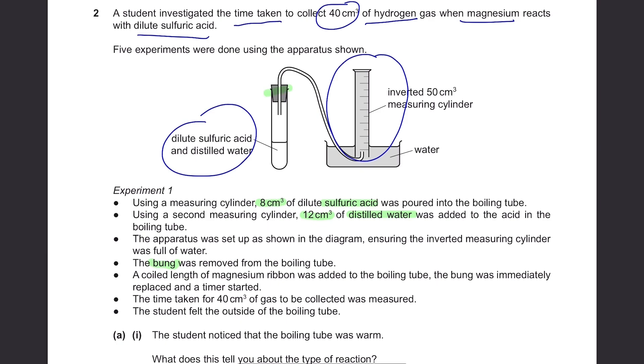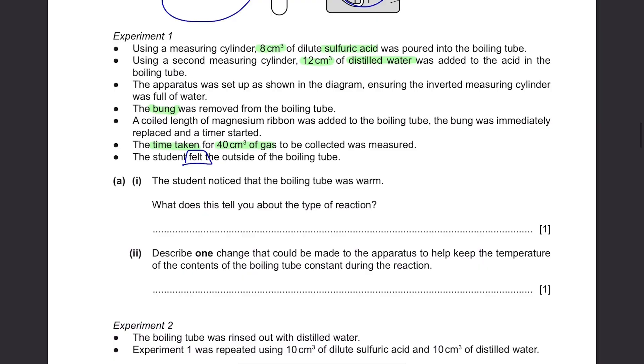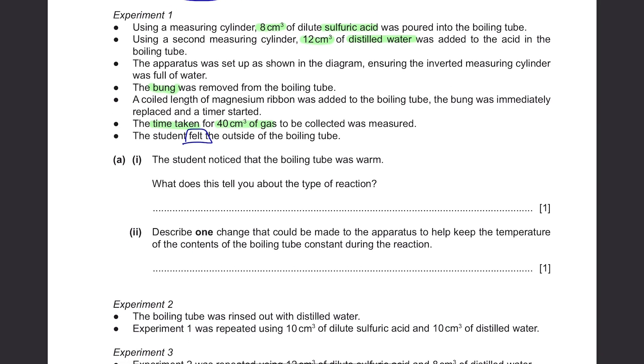Experiment 1, using a measuring cylinder 8 cm cubed of dilute sulfuric acid was poured into the boiling tube. Using a second measuring cylinder 12 cm cubed of distilled water was added to the acid in the boiling tube. The apparatus was set up as shown in the diagram, ensuring the inverted measuring cylinder was full of water. The bung was removed from the boiling tube. A coiled length of magnesium ribbon was added to the boiling tube. The bung was immediately replaced and the timer started.